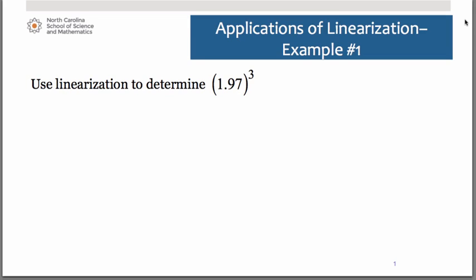Our first one we're going to look at is we want to figure out what 1.97 cubed is, and we can actually use a little bit of calculus to do that. Certainly you could sit there and do 1.97 times 1.97 times 1.97. Try doing that without a calculator. I didn't think you'd like to. So let's look at how we can use the linearization process that we've been talking about to find a pretty good estimation of this value.